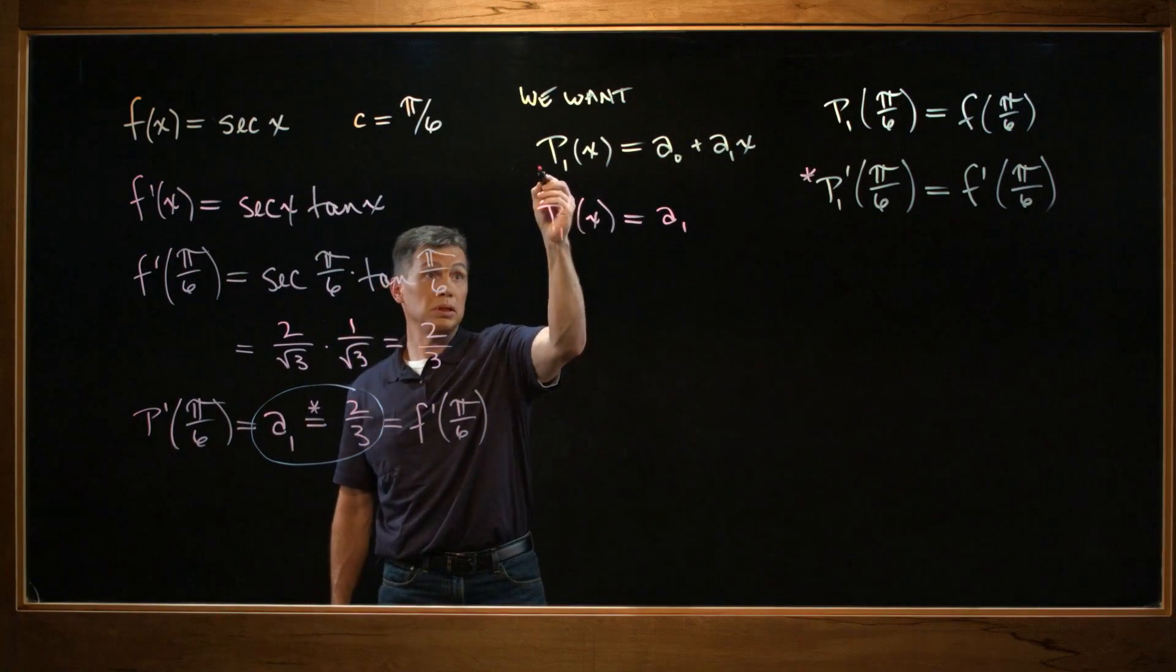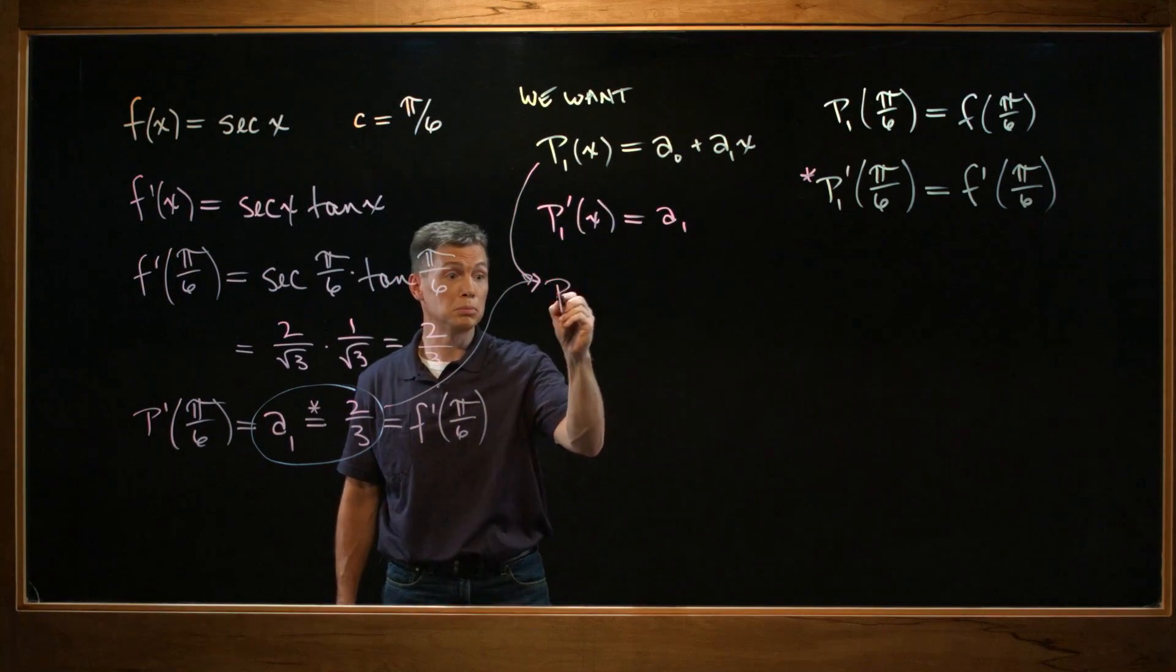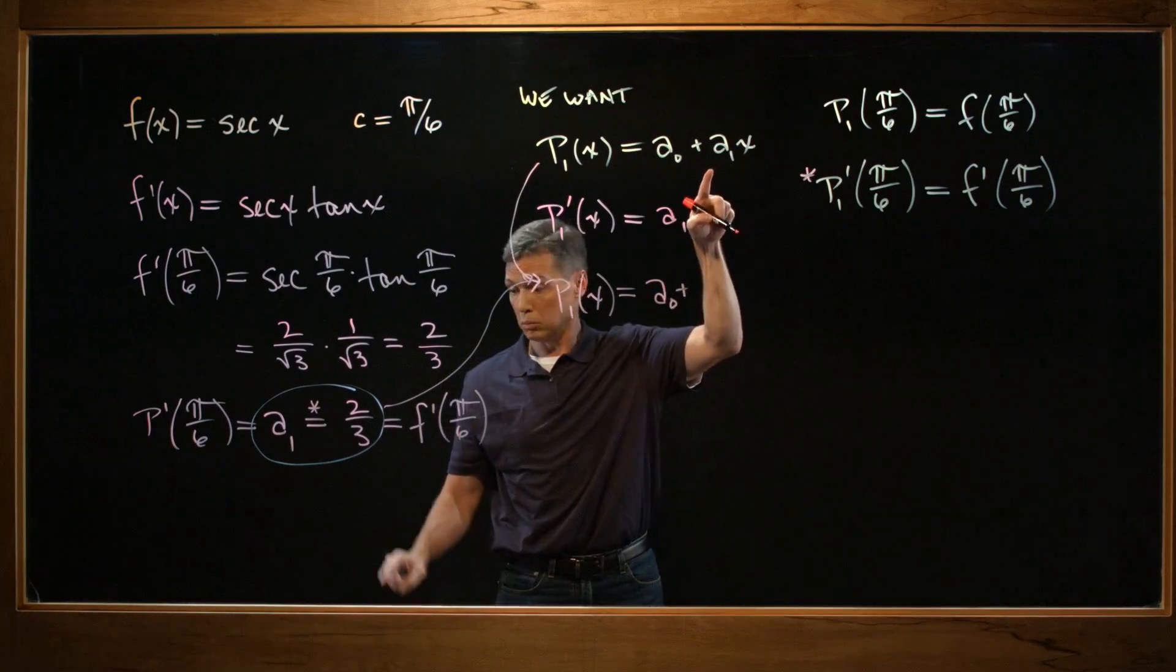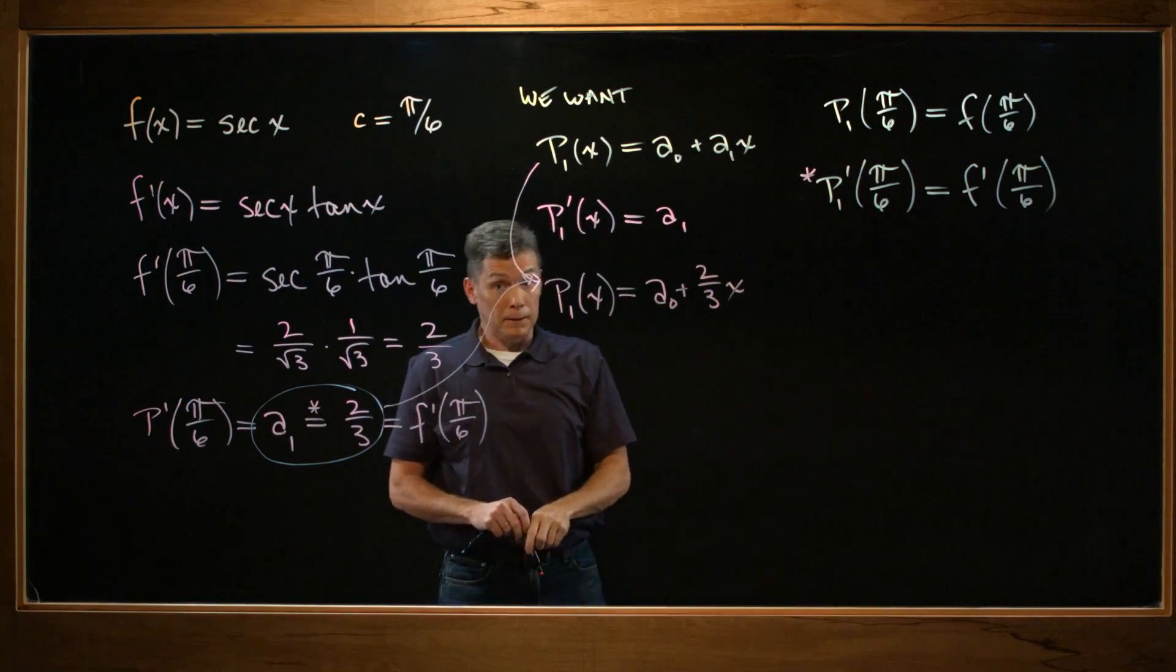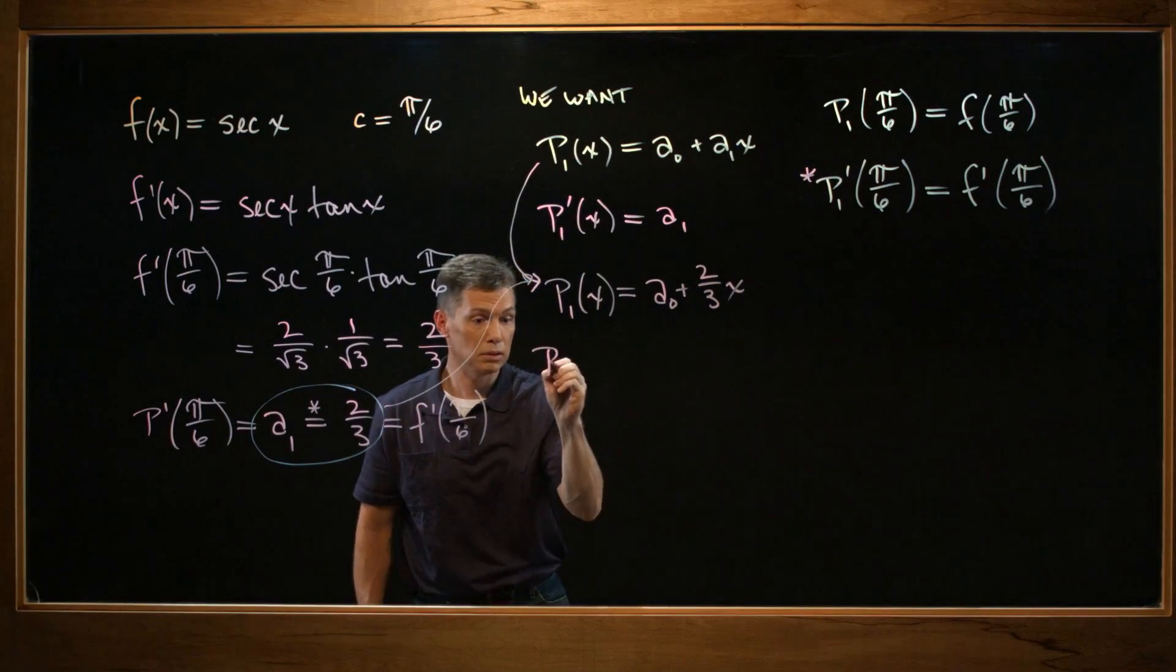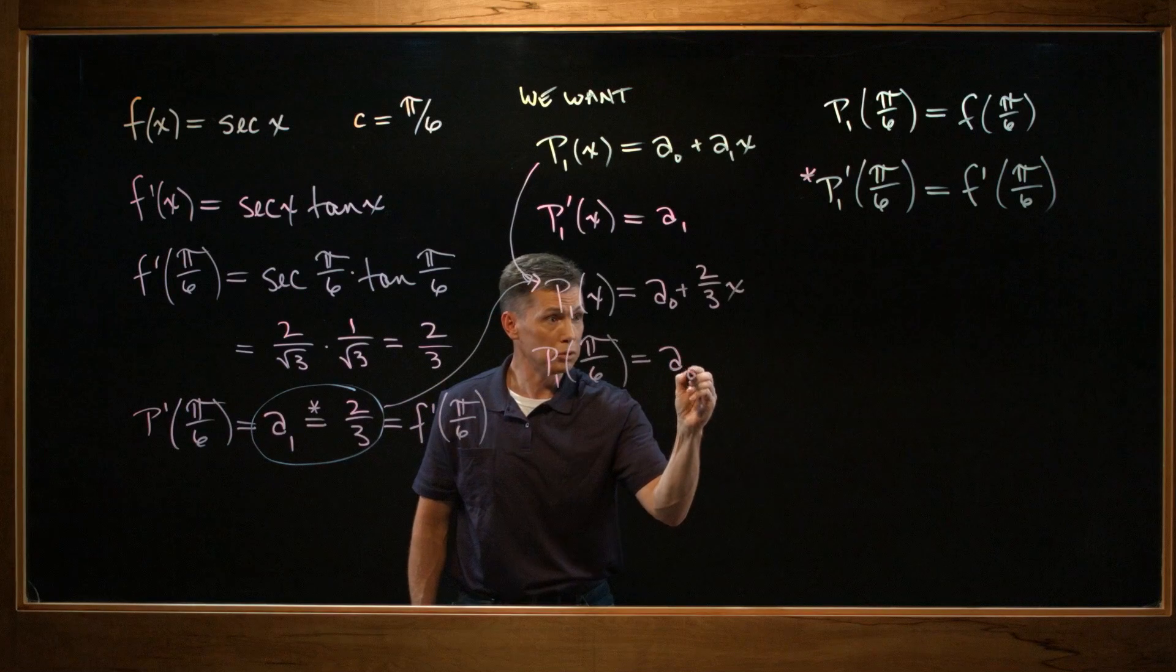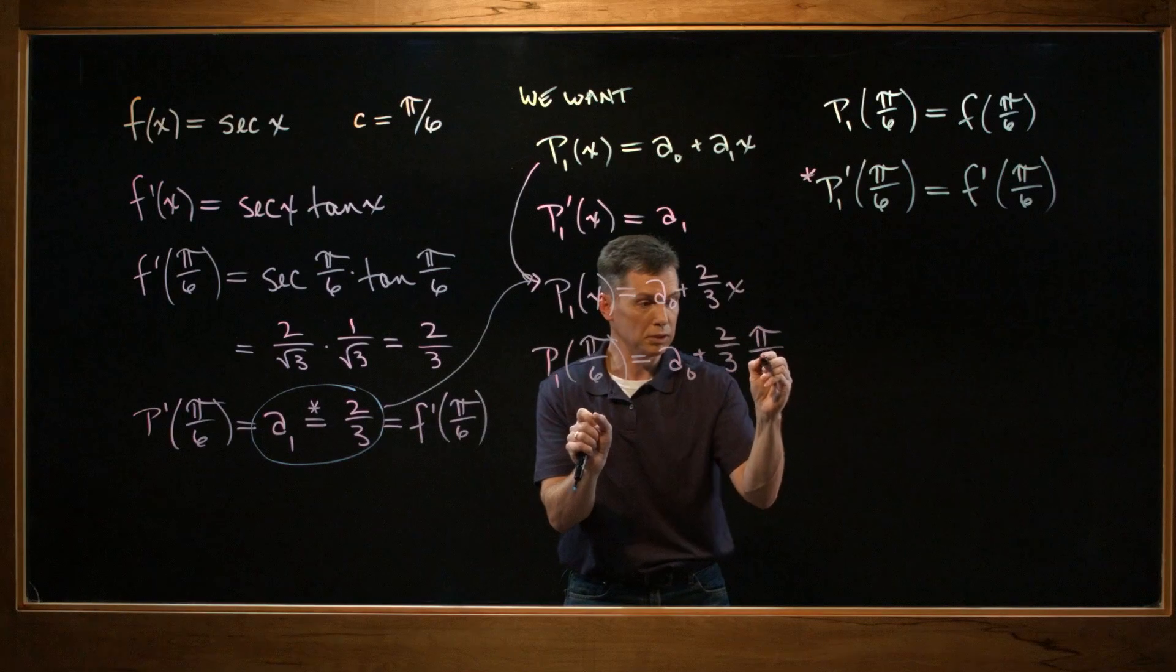All right, now let's go back to our P₁. And since we now know this, we have a new and improved P₁(x). It equals our a₀. We didn't figure that out yet. Plus a₁, which is 2/3, times x. And then I'll use the other piece of information they gave me, this P₁(π/6). P₁(π/6). That equals this expression, a₀ + 2/3 · π/6.